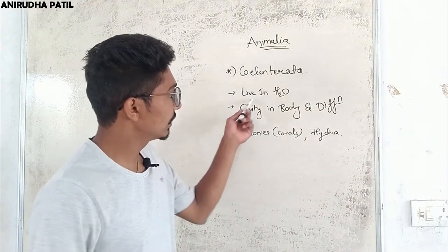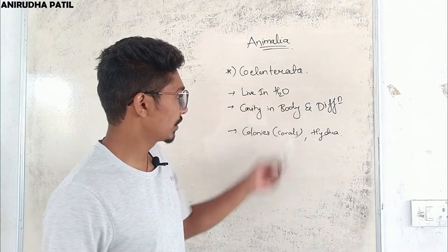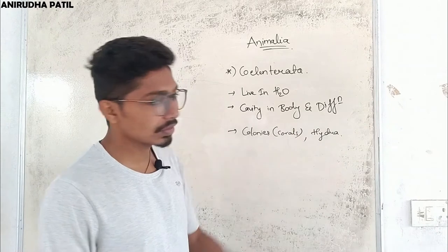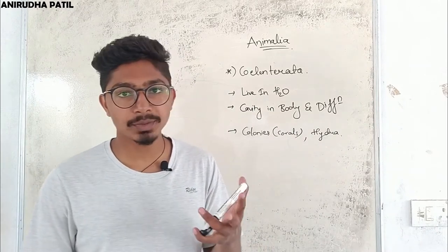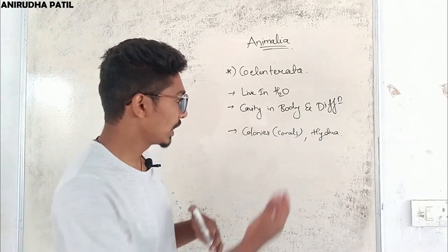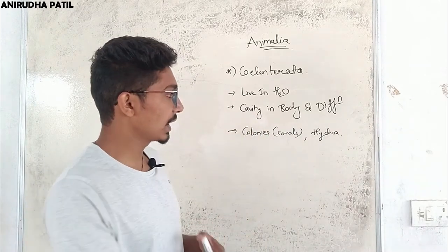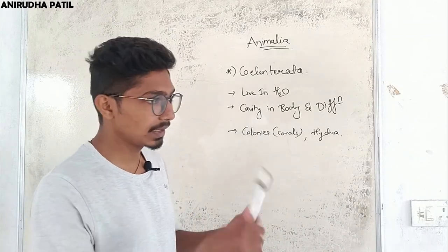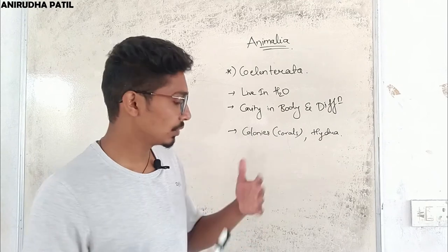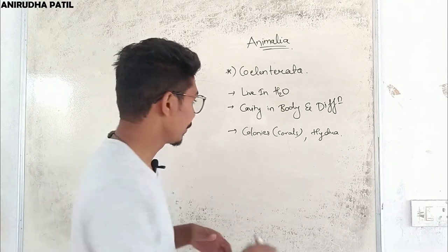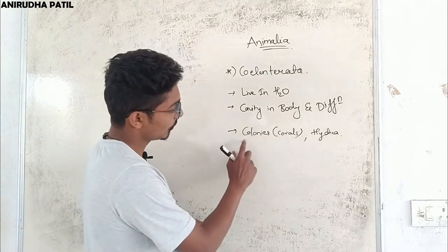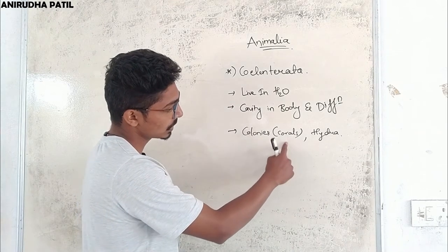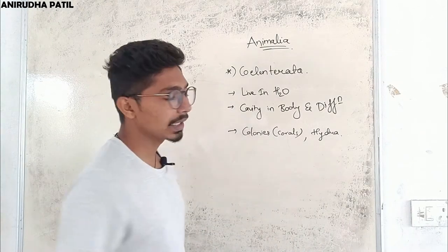Next is Coelenterata. They live inside water, and the body has a cavity with differentiation. There are two types of cells: one on the outer lining and one on the inner lining of the body. Most organisms live in colonies — for example, corals — while others like Hydra live individually.